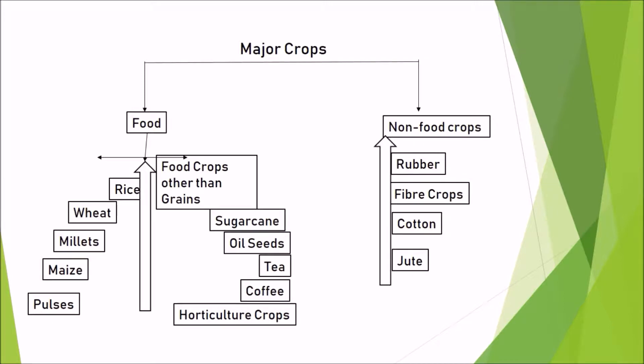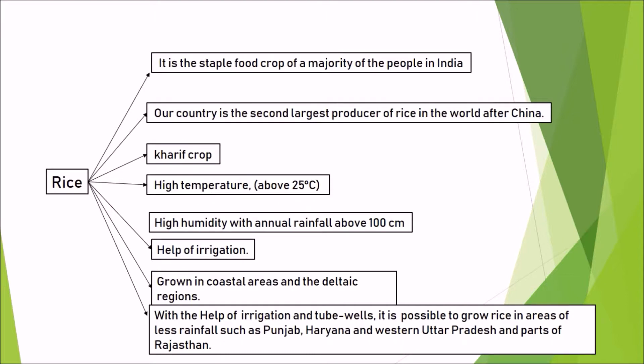Major crops in India can be broadly categorized into two groups: food crops and non-food crops. Food crops include rice, wheat, millets, maize, and pulses. Food crops other than grains include sugarcane, oilseeds, tea, coffee, and horticulture produce. Let us see each one in detail.